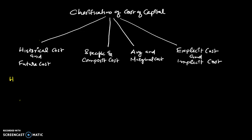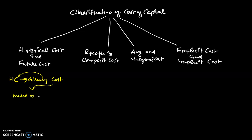Historical cost refers to the cost which has already been incurred for financing a project. We already incurred the cost of capital as historical cost. It is calculated based on past data. We can make use of that past data to calculate historical cost.